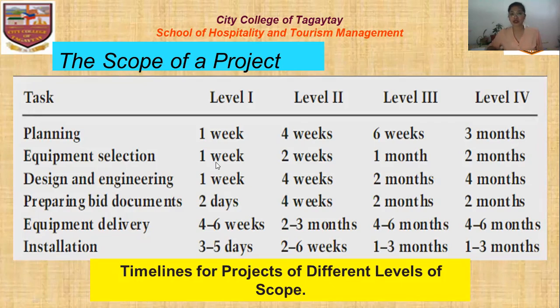For equipment selection: Level 1 can be one week, Level 2 is two weeks, Level 3 is one month, and Level 4 is two months.